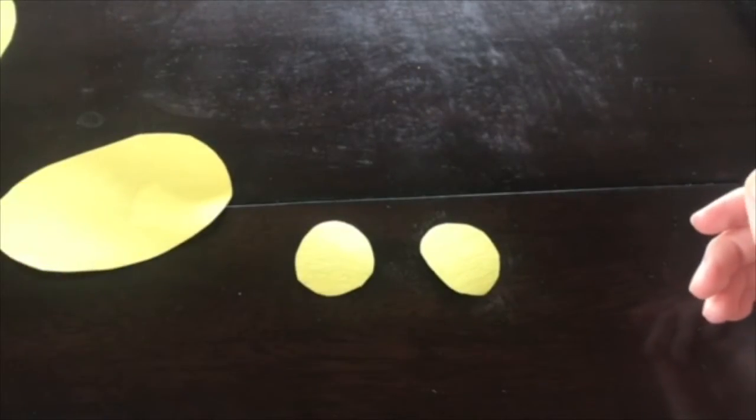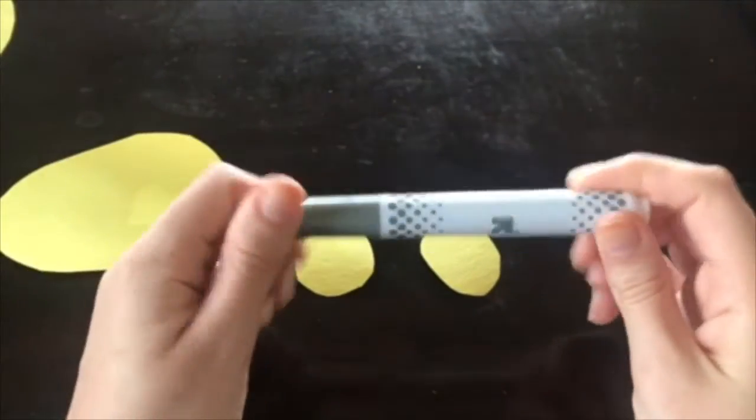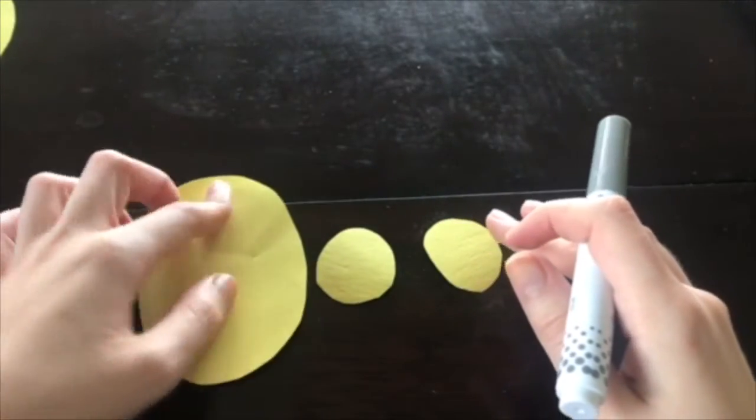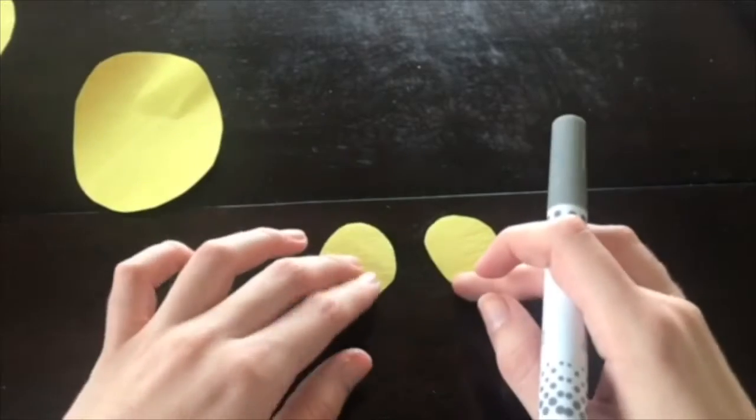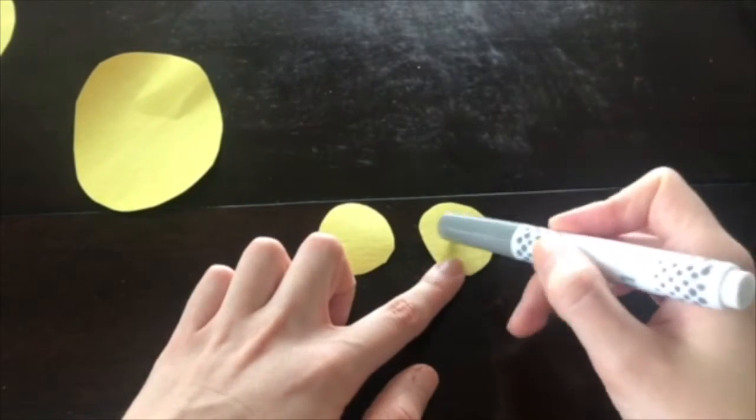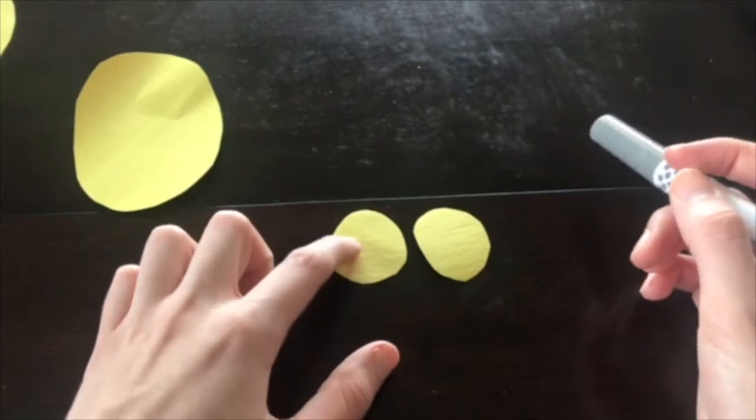For the next step, take your marker, colored pencil or crayon, and we're going to color in parts of the face for our yak. We'll start with the eyes - these two circles. I'm just going to color these in to resemble the two eyes.